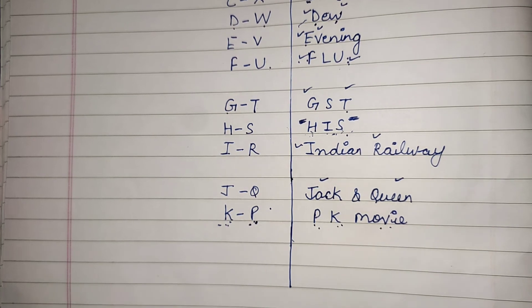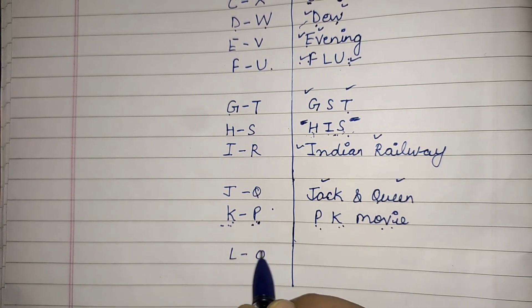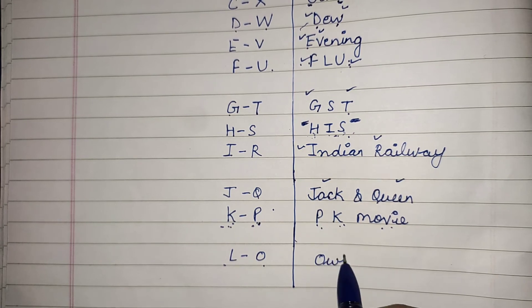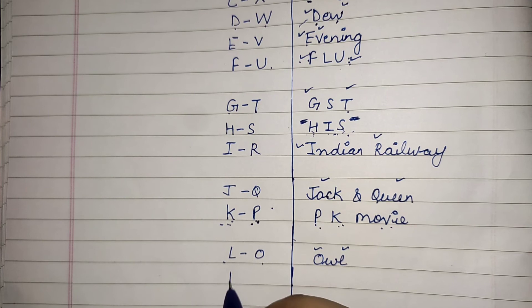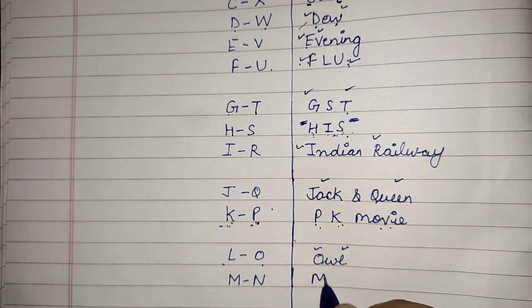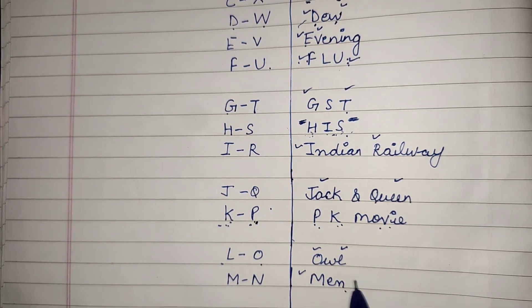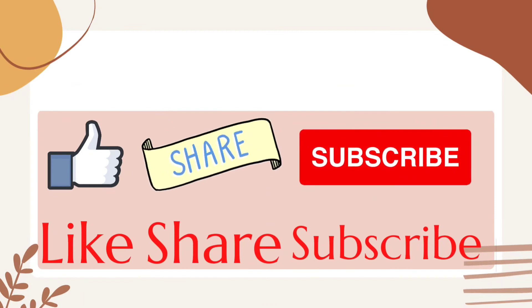Next is L and O — L and O is 'owl', the bird that wakes up at night, so L and O are opposite to each other. And finally M and N — M and N is 'men', so M and N are opposite to each other.